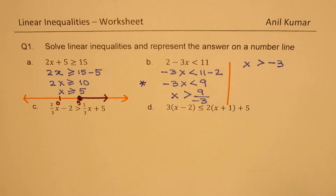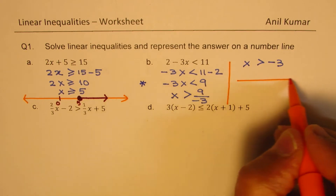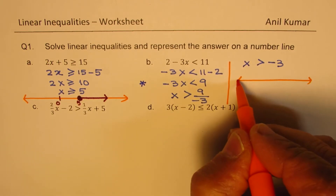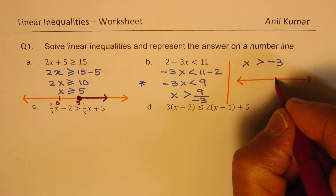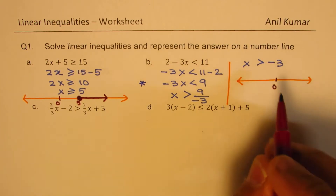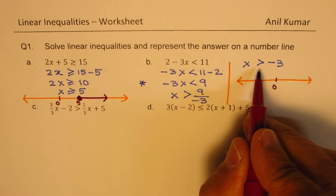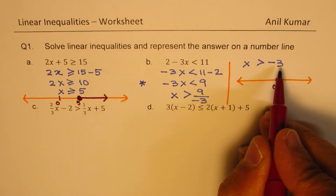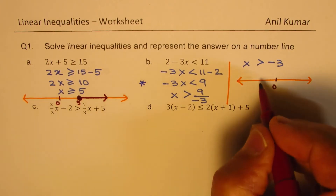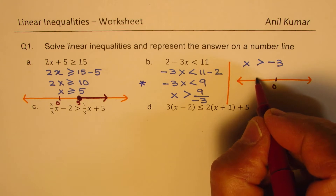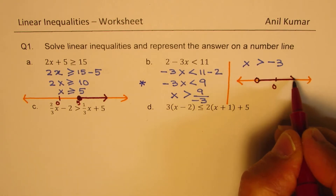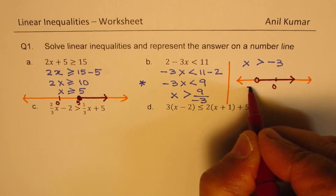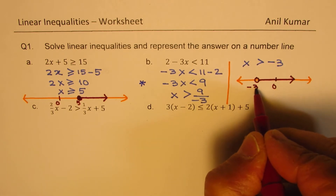Let's sketch this solution on a number line. We have a number line with 0 marked. The solution is x greater than minus 3, not equal to minus 3, so we draw an open circle (not filled) at minus 3 and show an arrow on the right side.